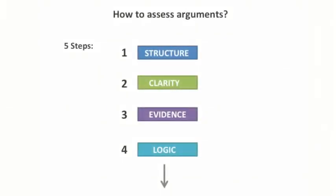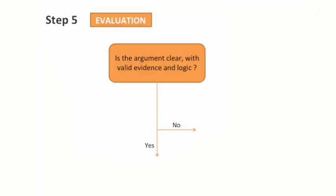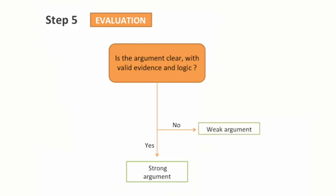We've now seen four steps out of our five-step technique. The last step is the most important: evaluation. This is when you can conclude what you think of the argument. Taking all your findings from the four previous steps, you should now evaluate the argument. Is the argument clear and logically sound? Is the evidence given relevant and credible? Are you sure it does not contain fallacies? If so, the argument is likely to be a strong argument. However, if the answer is no, then the argument is weak and its conclusion should be rejected, at least until better evidence is available.